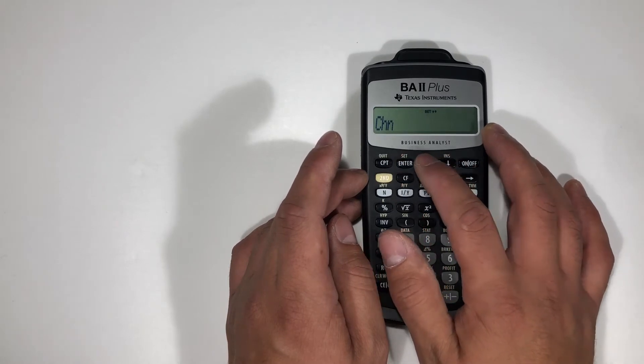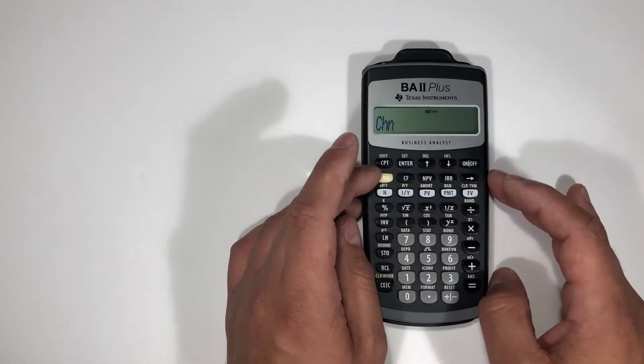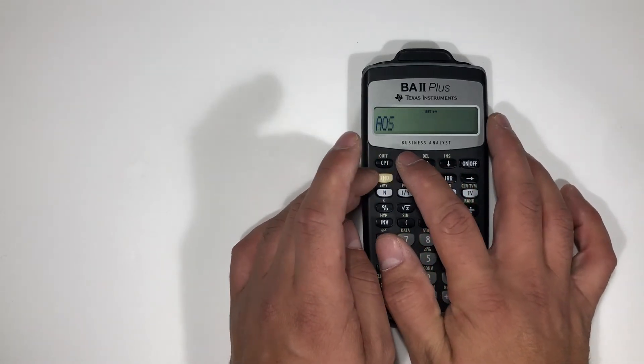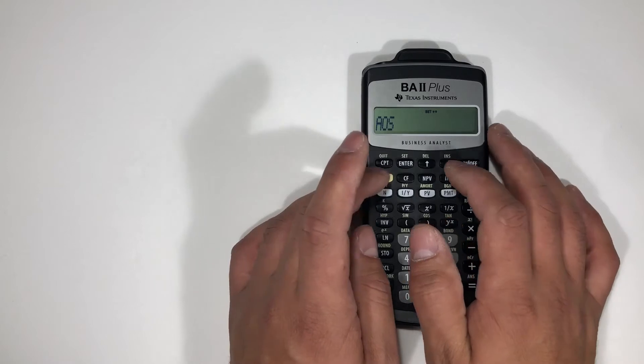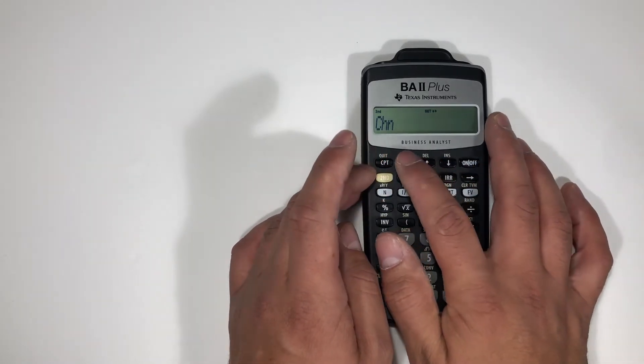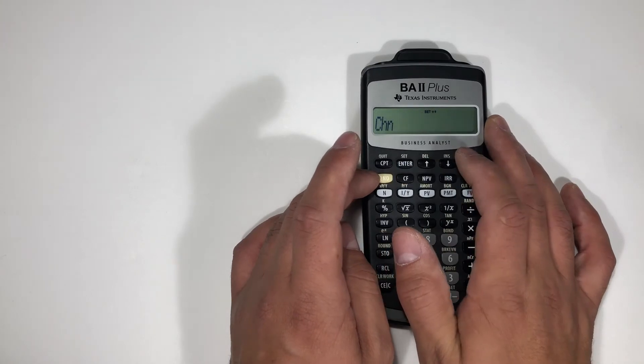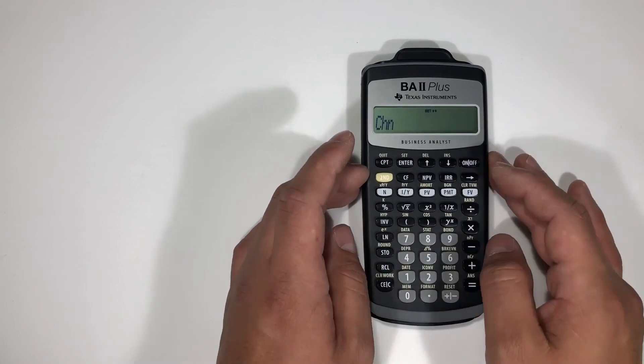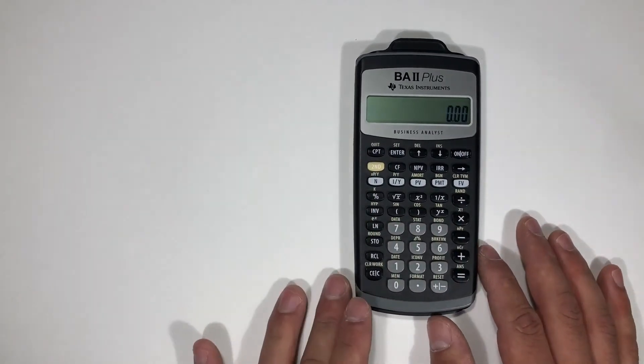This is where you're going to select which one it is that you want. Then you're going to hit the second button, you can hit second to change it. That's AOS, that's CHN. Let me show you what the difference is between the two. We'll start with CHN, so right now we're in chain method.